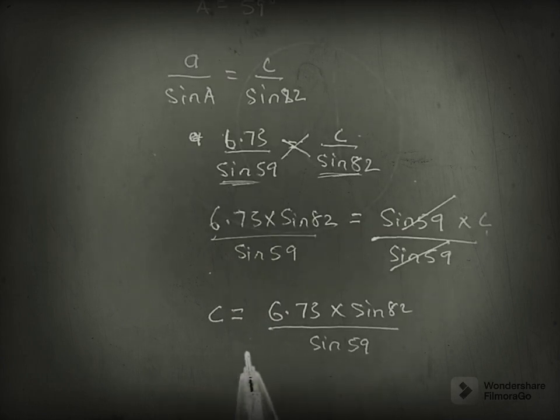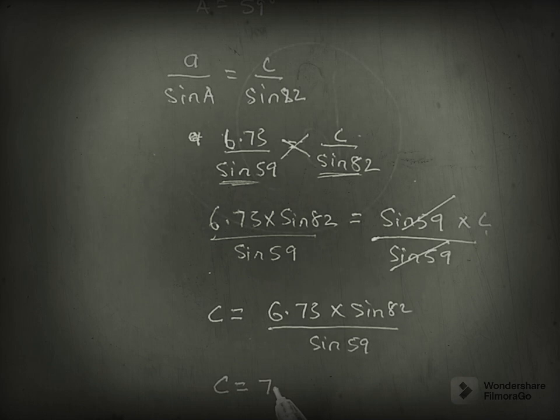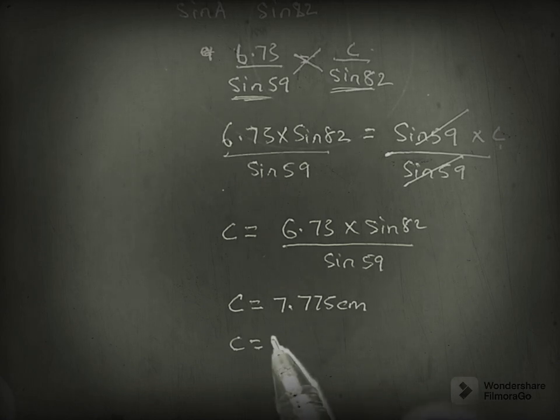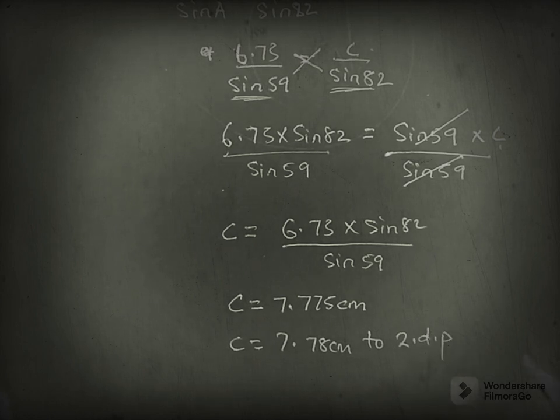Punching this on a calculator, we have c equals 7.775 cm, or to two decimal places, we could have 7.78 cm.